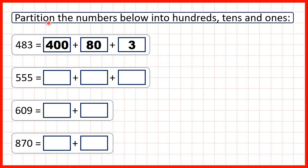So when we partition numbers, what we are doing is showing the value of each digit in the number. And we can represent the partition as an addition, because if we add 400, 80, and 3, we will get 483.